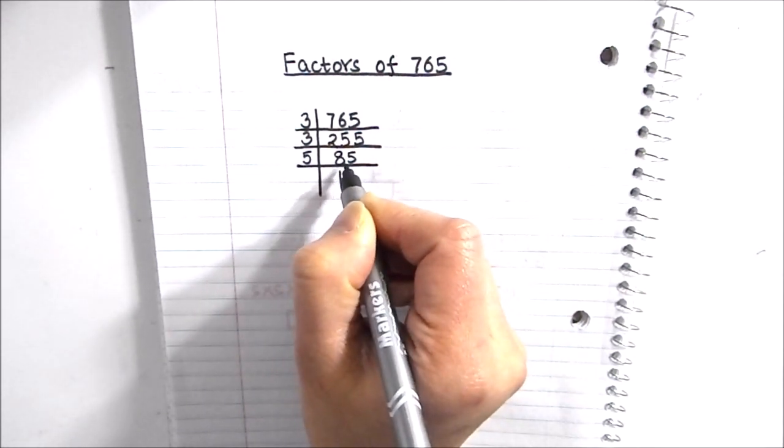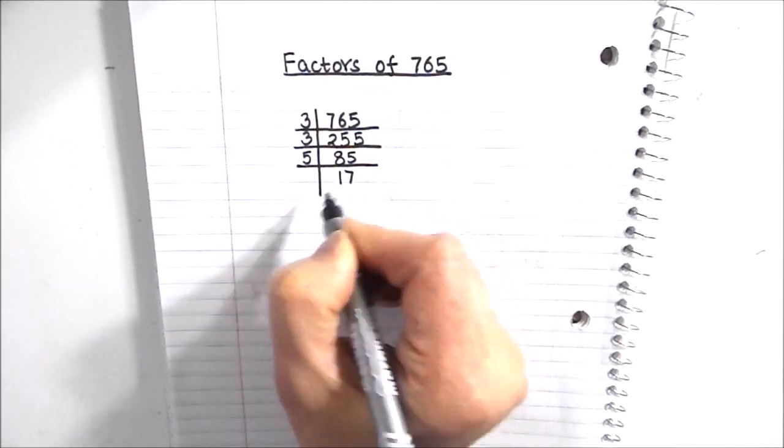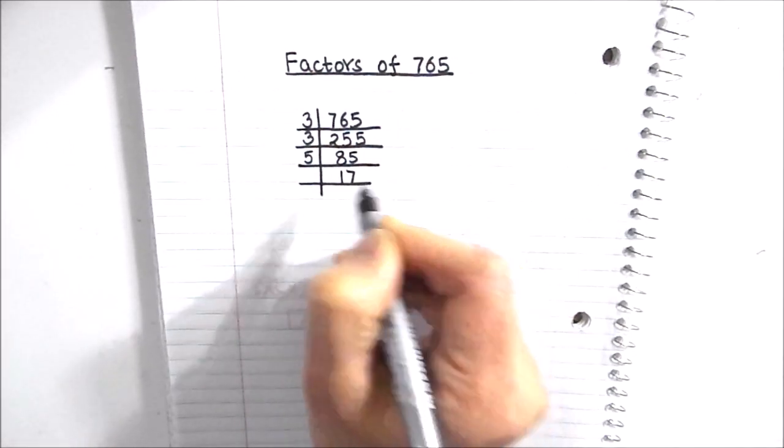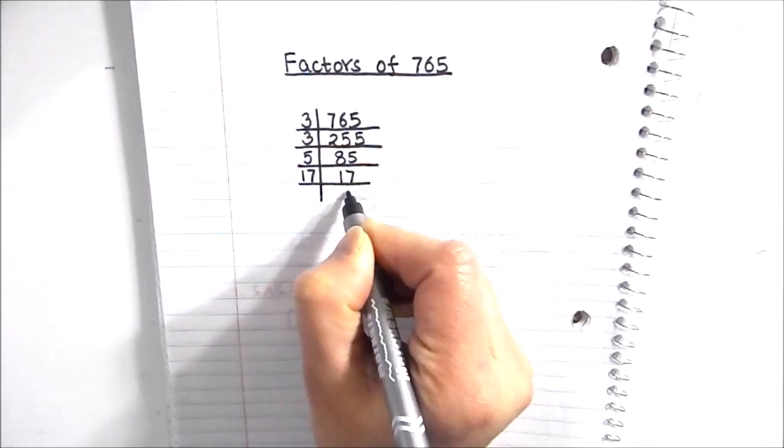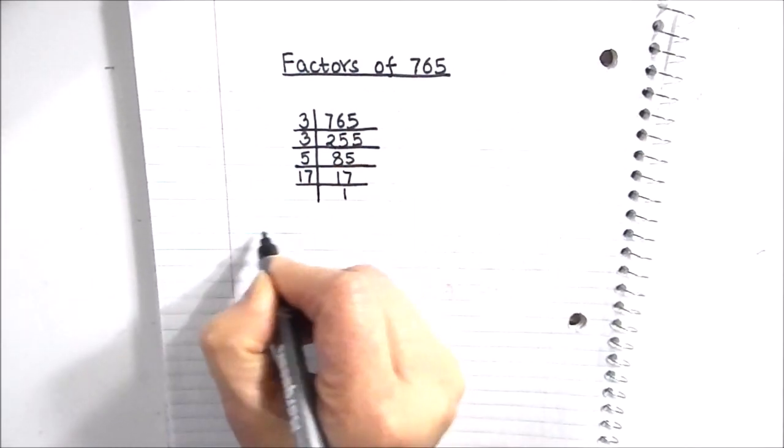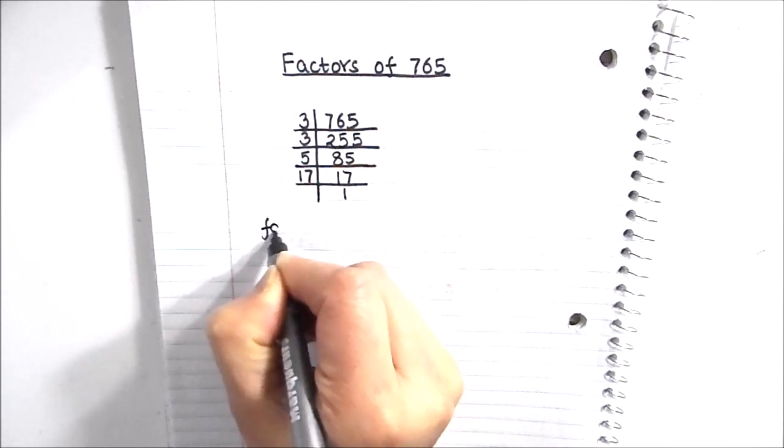5 times 1 is 5, 3 is remainder, this becomes 35. 5 times 7 is 35. So 17 is a prime number, it is only divisible by 17. 17 times 1 is 17.